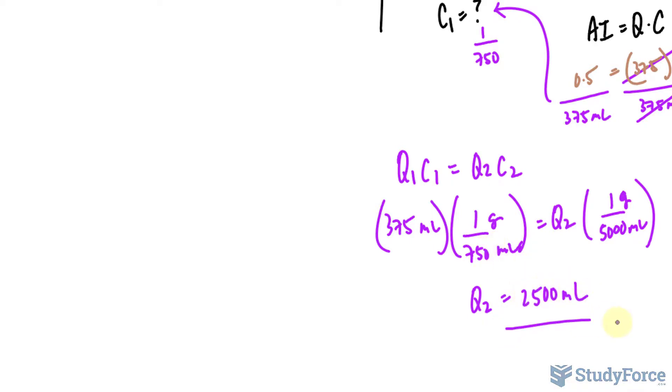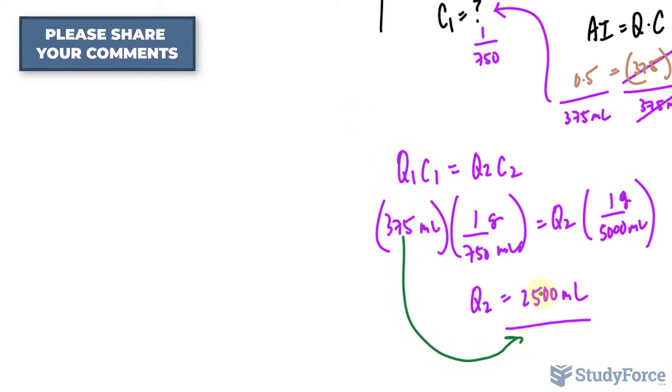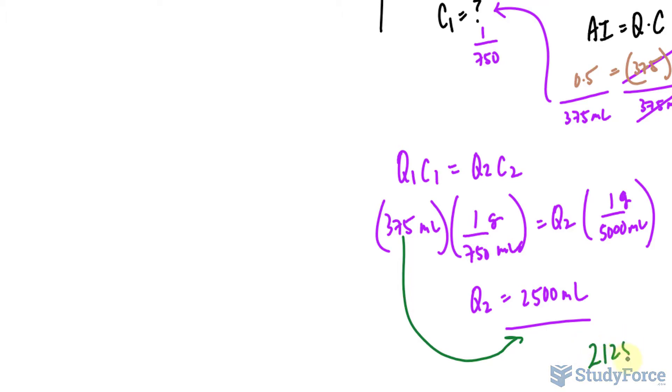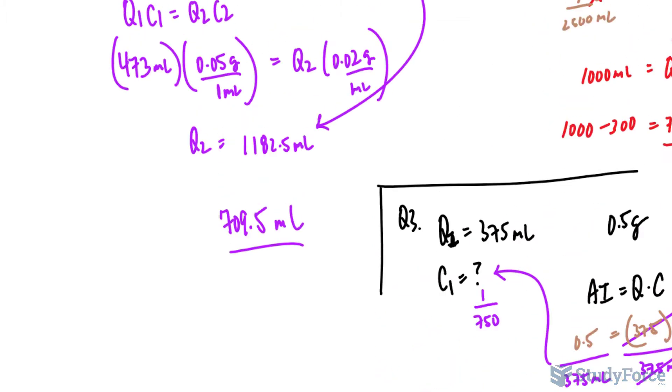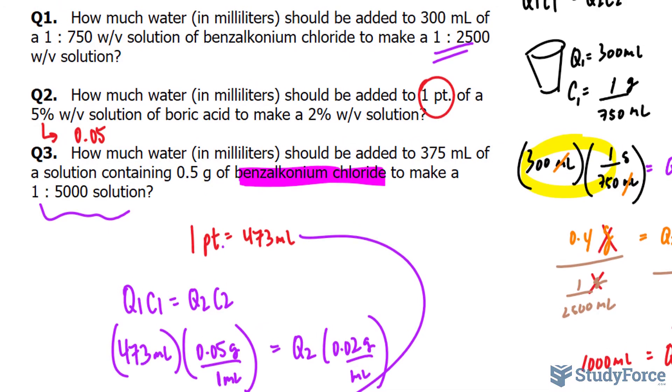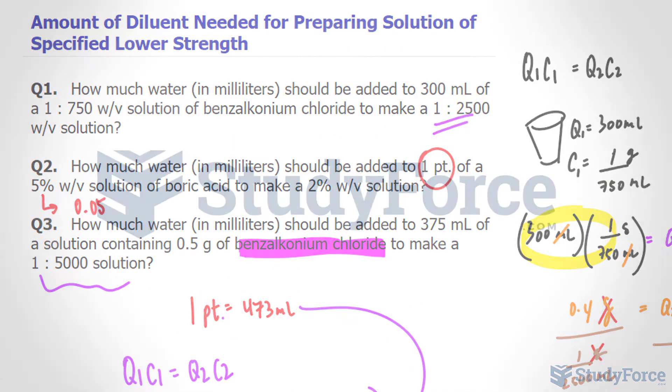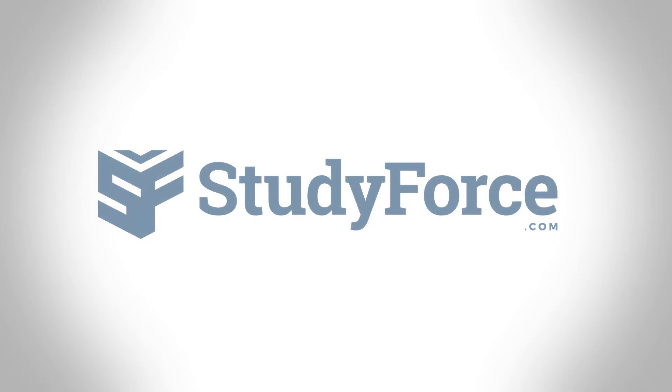So, to get this new concentration of 1 over 5000, and we're starting with 375, we need to add a lot of diluent to make up 2500 in total. And that answer is, 2125 milliliters of diluent needed to make this solution. So there you have it. Now that is how to find the amount of diluent needed to prepare a solution of a specified lower strength.